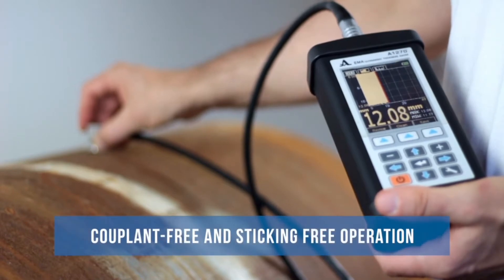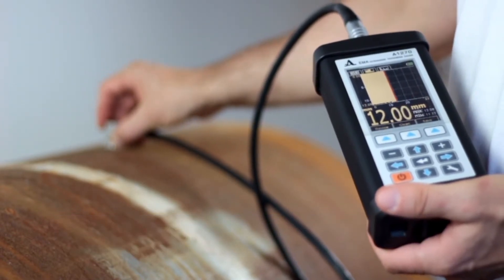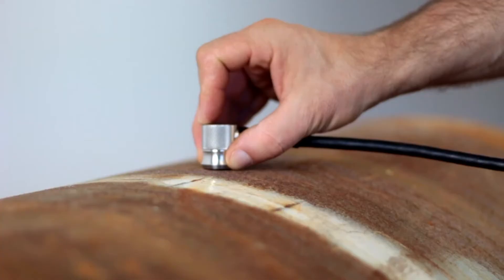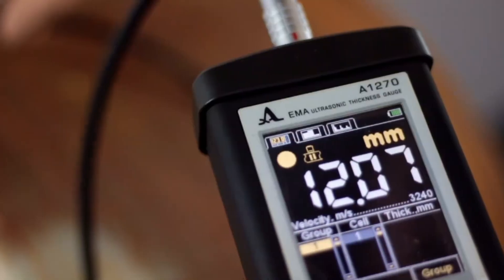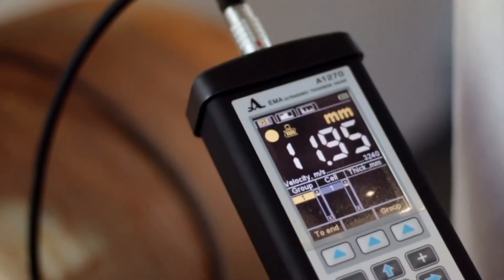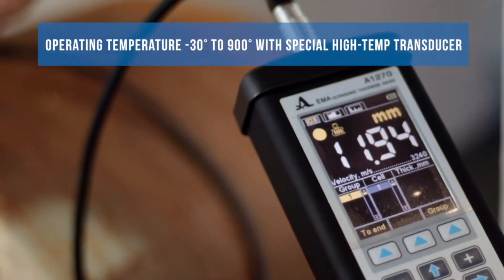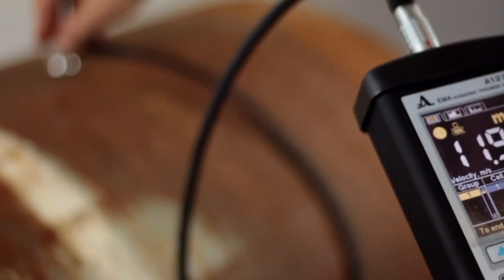A novel electromagnetic acoustic thickness gauge, A1270 IMAT, with an innovative pulse magnetization technology is designed to measure the thickness of objects made of carbon steels and aluminum alloys without the use of a coupling liquid. Apart from the couplant-free operation, a substantial advantage of the new technology consists in the absence of a permanent magnet in the IMAT transducers.